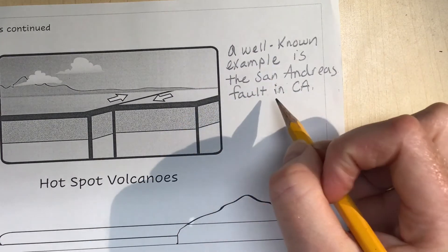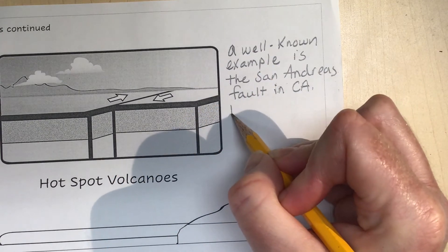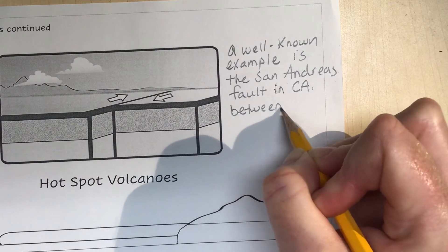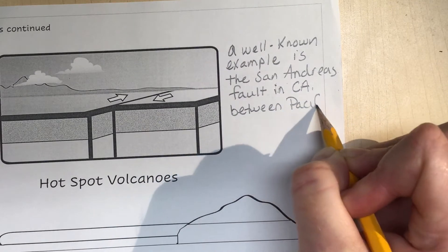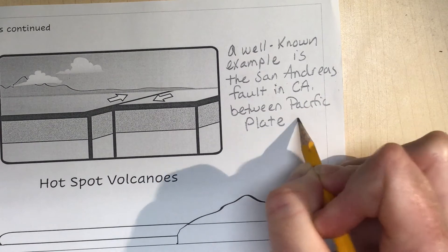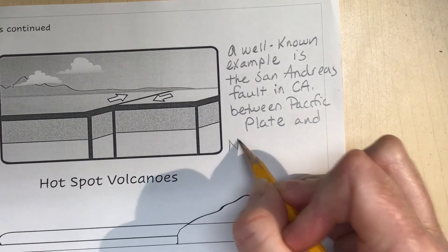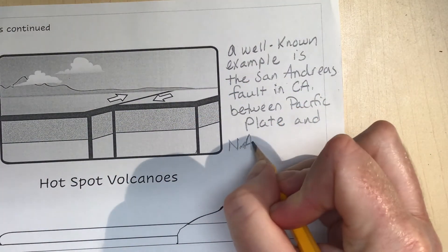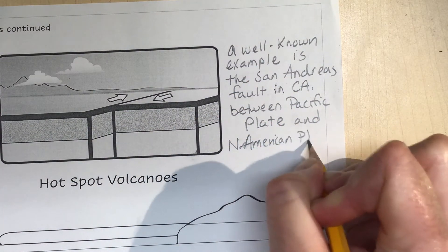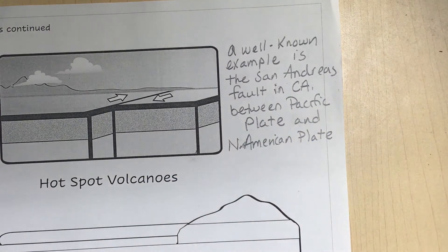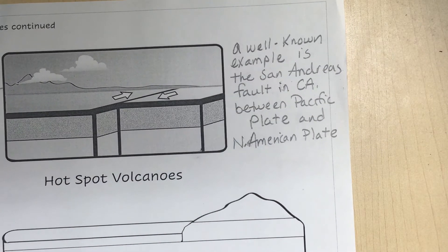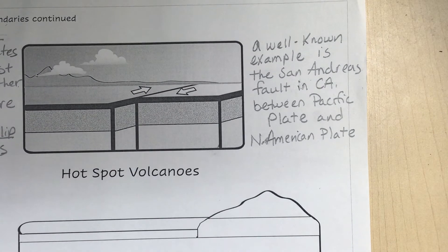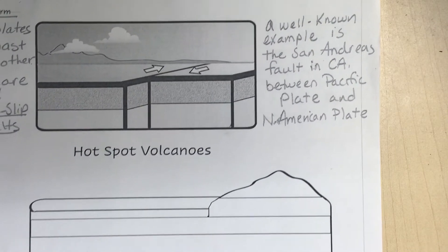It's the boundary between the Pacific Plate and the North American Plate. We are on the Pacific Plate, and further east in the Antelope Valley they are on the North American Plate — and the rest of the country is on the North American Plate as well.